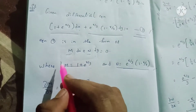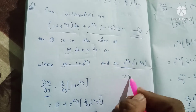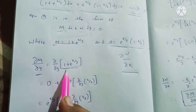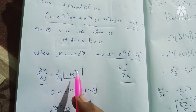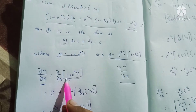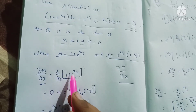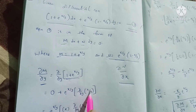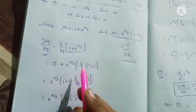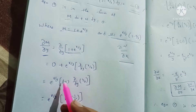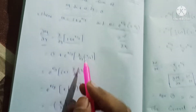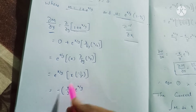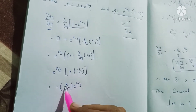The equation 1 is a partial derivative check. Compute dou M by dou y: do by do y into 1 plus e power x by y. Partial derivative of 1 plus e power x by y with respect to y gives e power x by y into the inner derivative do by do y of x by y. Therefore, e power x by y into x into minus 1 by y squared, giving minus x by y squared into e power x by y.